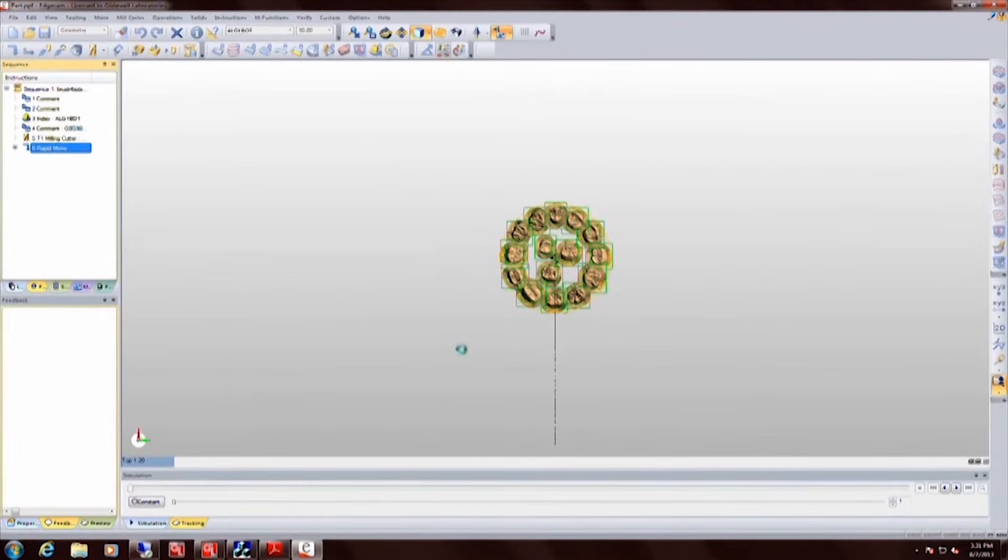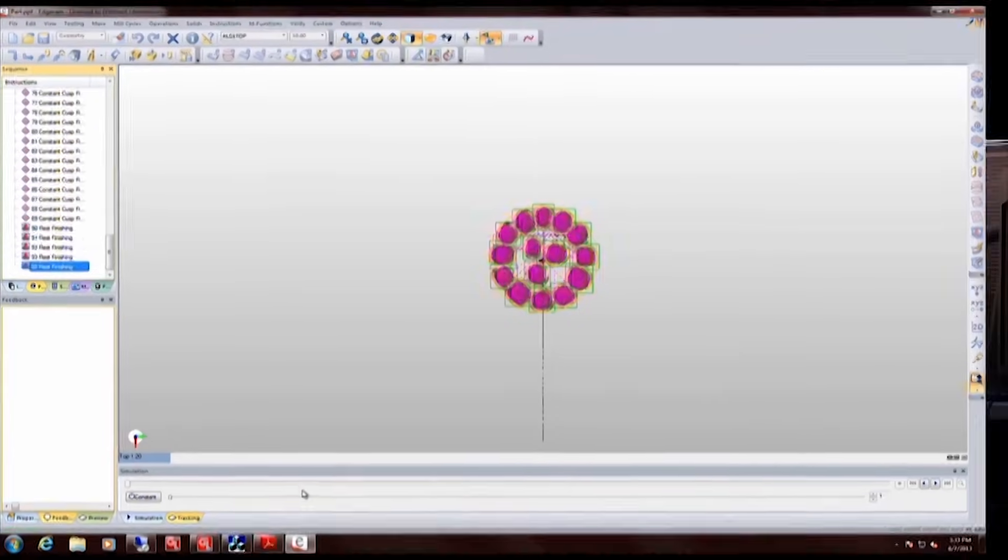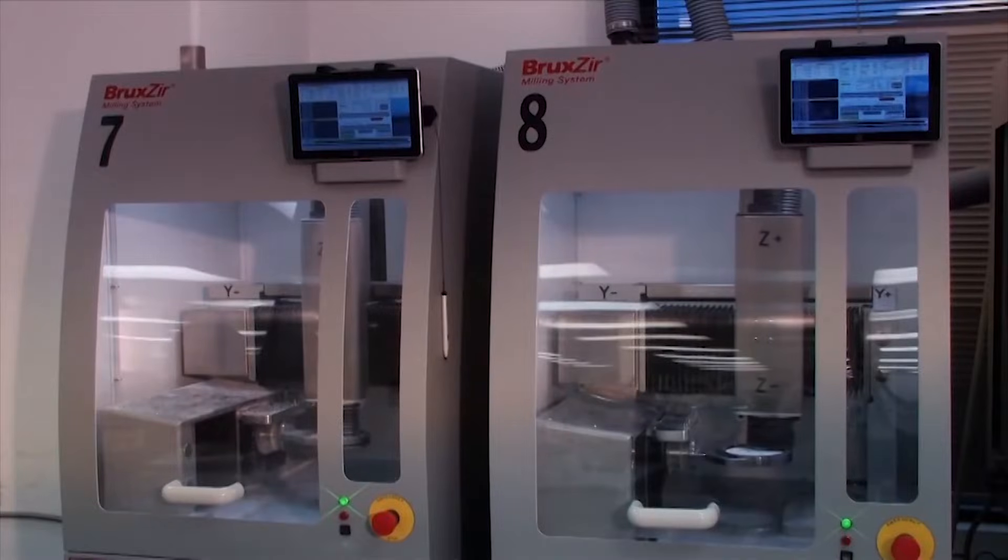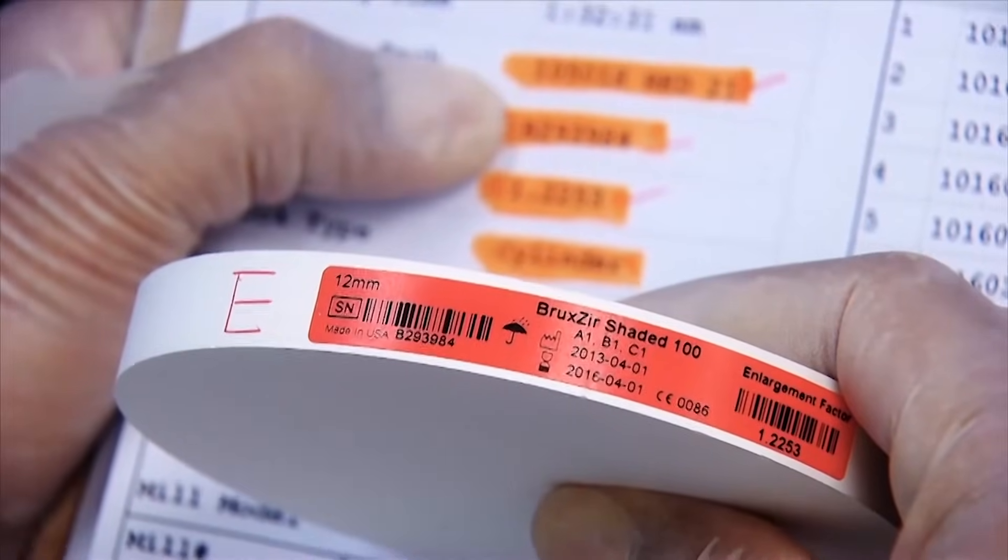You can see that the different crown designs here are all being nested. These are all going to be A2 crowns, for example. And so unlike Emacs, which is milled in a small block, Bruxer crowns are milled from a big white hockey puck. So we do a bunch of shades, a bunch of crowns at the same time.